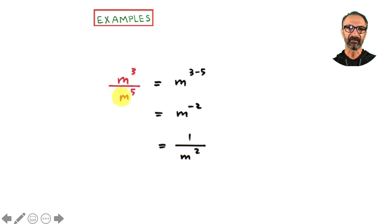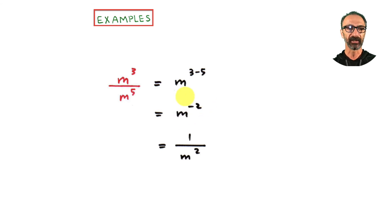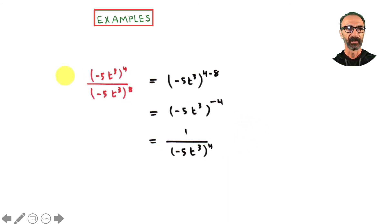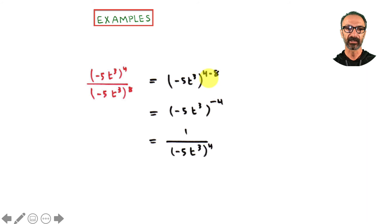Another quick example: m to the third over m to the fifth — that's three minus five which is negative two. Be careful: on exams or quizzes you might be asked to leave answers without negative exponents. So if you end up with negative two as the exponent, you're not done — bring it down to the denominator to make it positive: one over m squared.